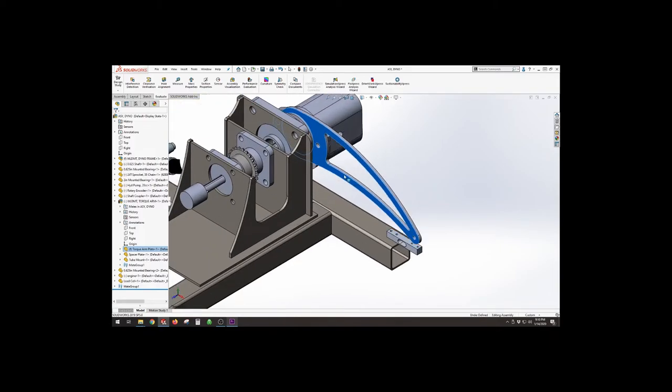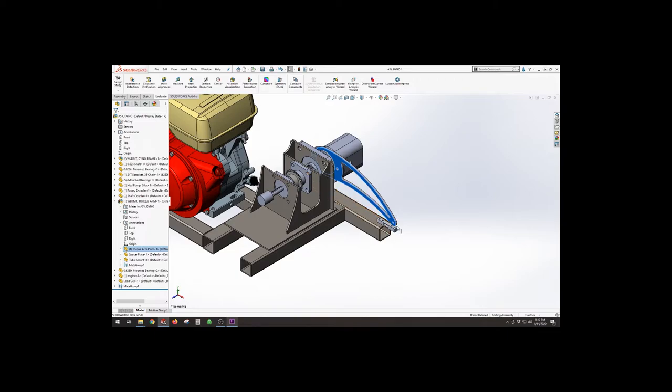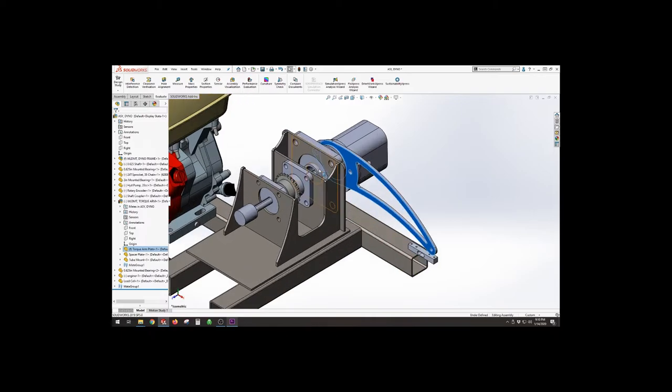This arm contacts that load cell at a determined distance away from the axis of rotation. So I can actually have a moment or torque. So right now this is set up to be one foot away. My offset is one foot.